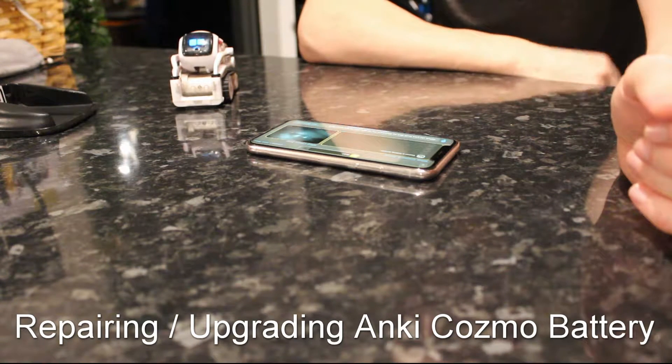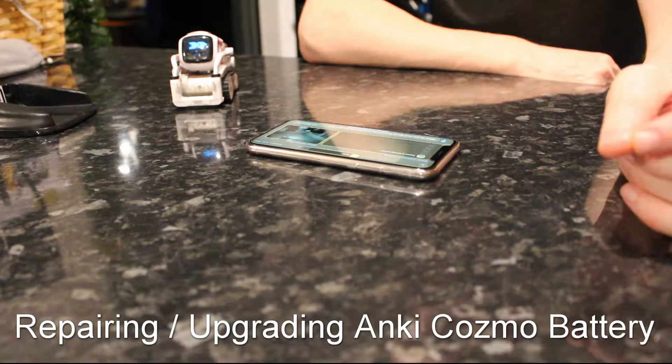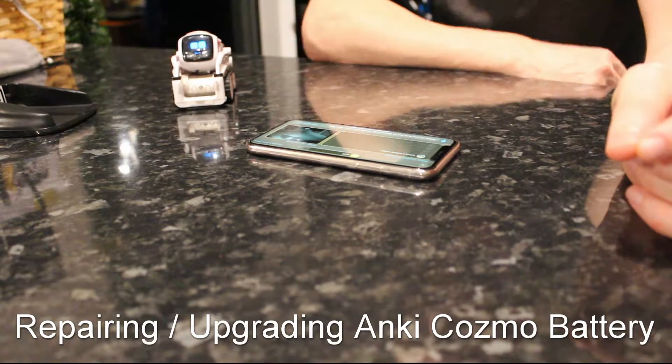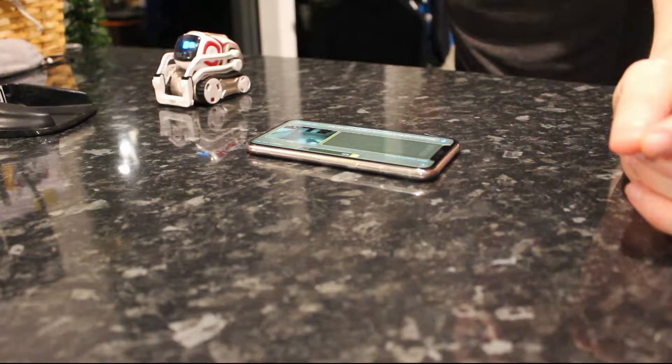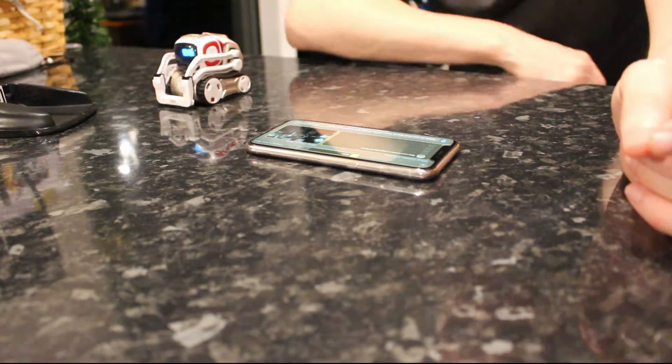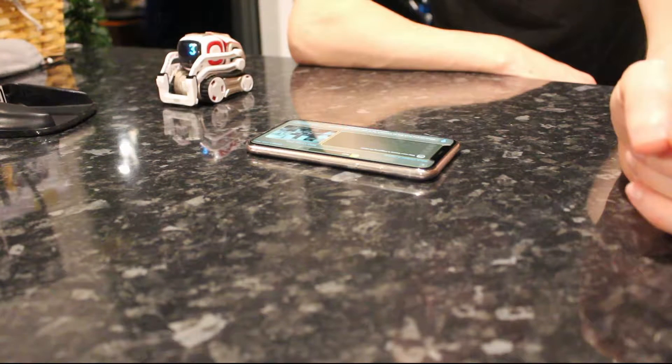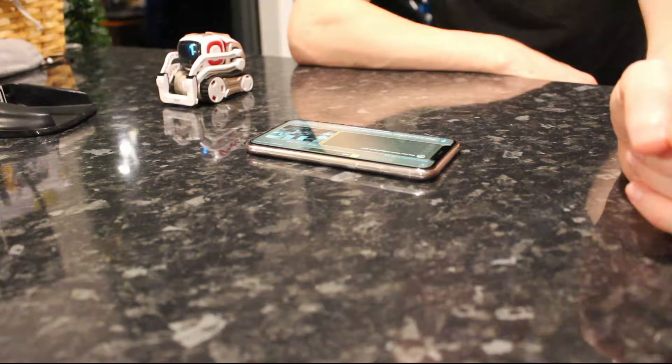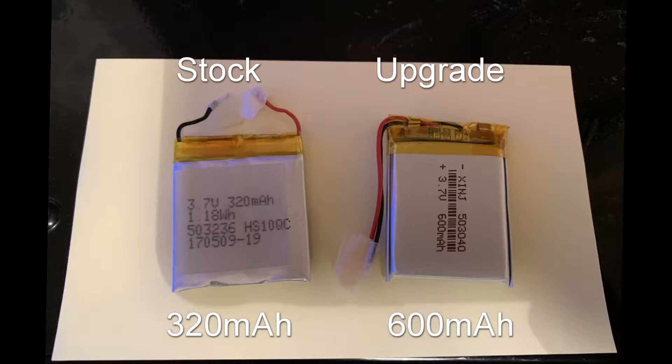Okay, so as you probably know, Anki ceased trading earlier this year and a lot of Cosmo owners are noticing that their devices are starting to slow down and many of them are actually dying. The internal batteries are failing and they are not user serviceable. So this tutorial is going to show you how to replace the stock 320mAh battery with an upgraded 600mAh battery which should give about 80 minutes playtime in between charges.